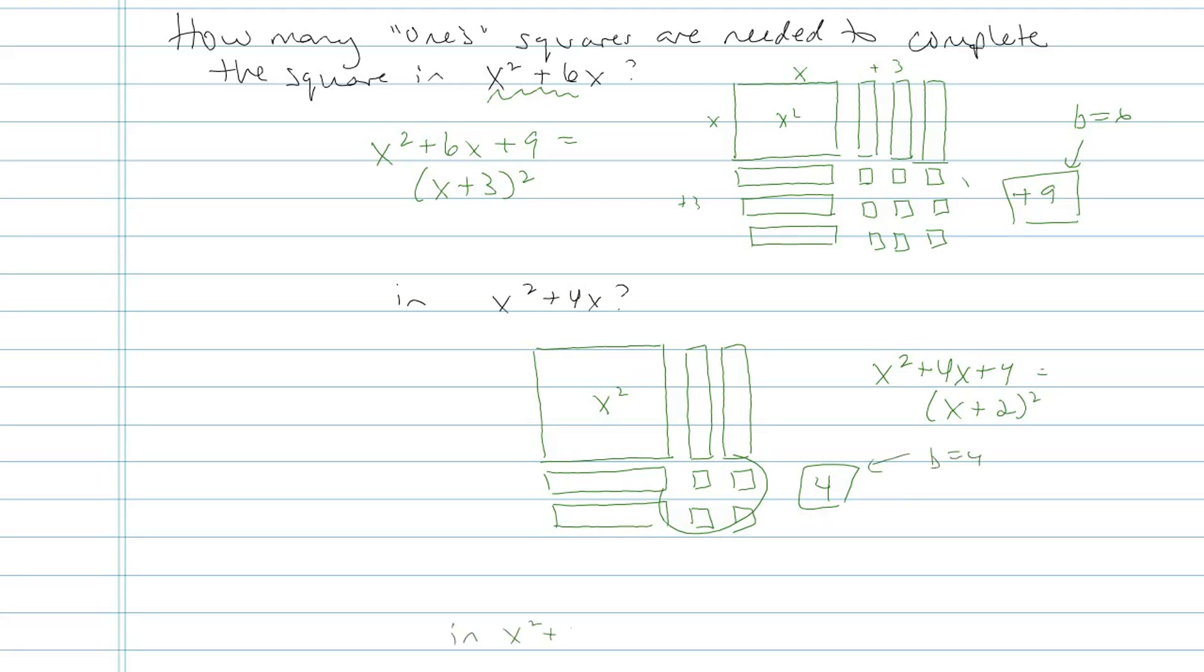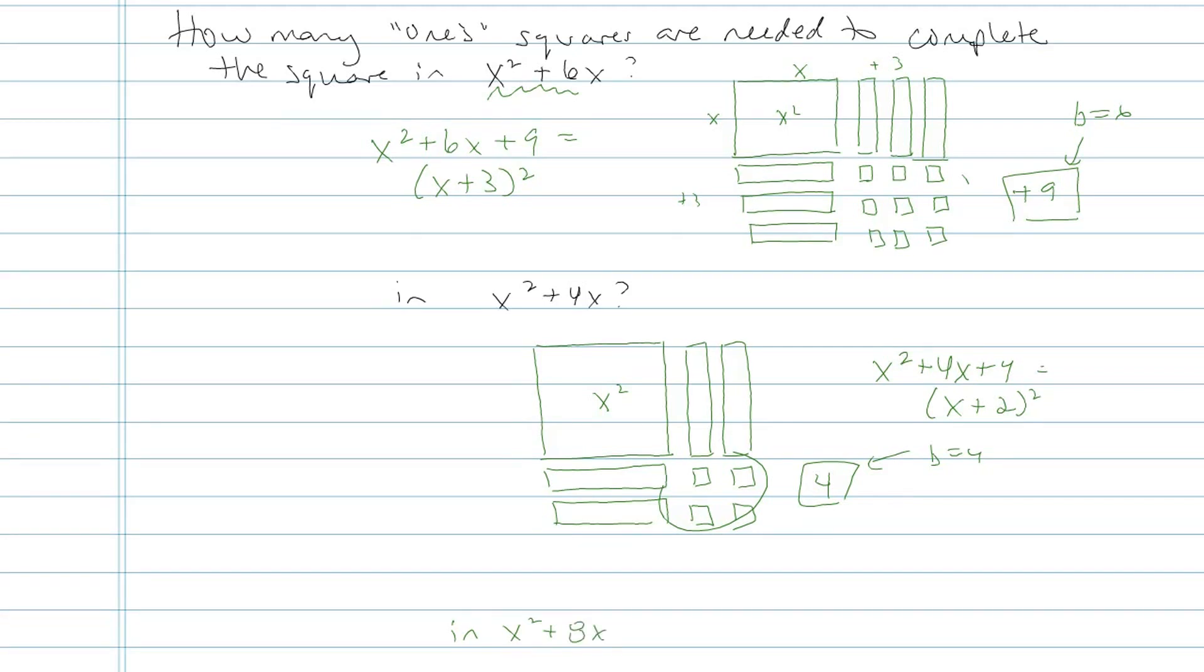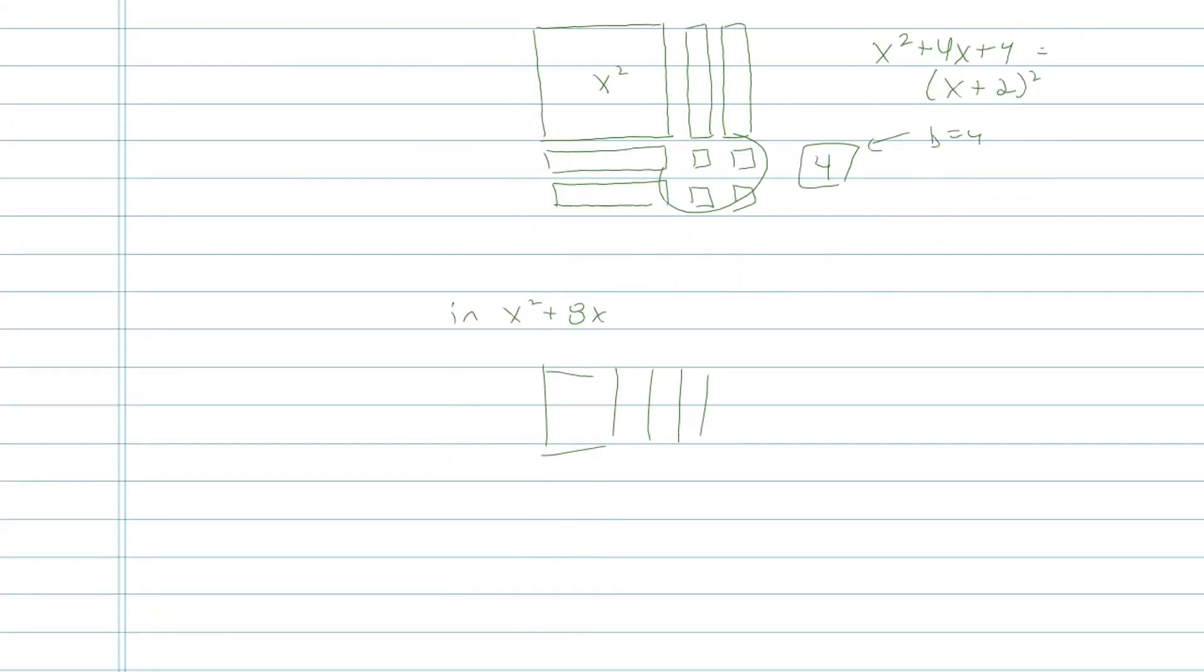Let's say we had x squared plus 8x. Hopefully I'm going to draw this one faster. 1, 2, 3, 4, 1, 2, 3, 4, I need 1, 2, 3, 4, 5, 6, 7, 8, 9, 10, 11, 12, 30, 40, 50, 60.